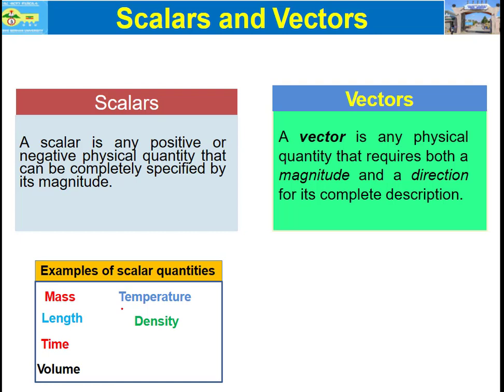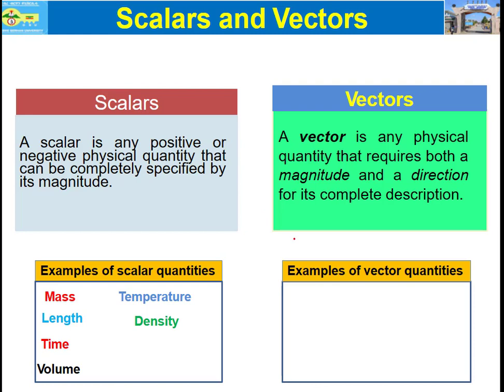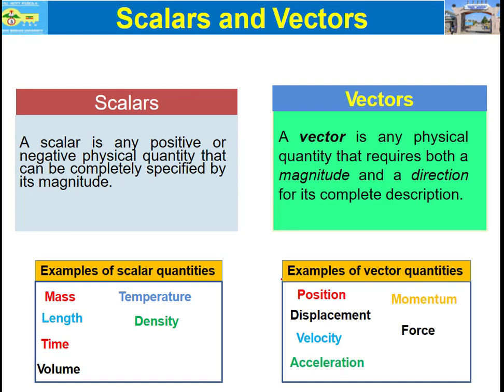A vector is any physical quantity that requires both magnitude and direction for its complete description. Examples of vector quantities are position, displacement, velocity, acceleration, momentum, and force.